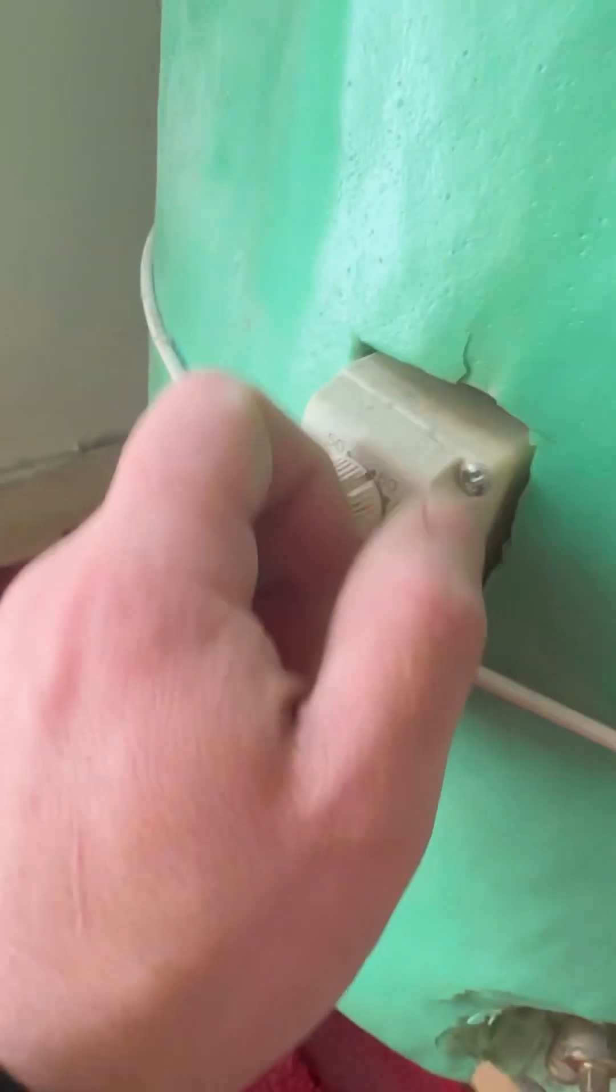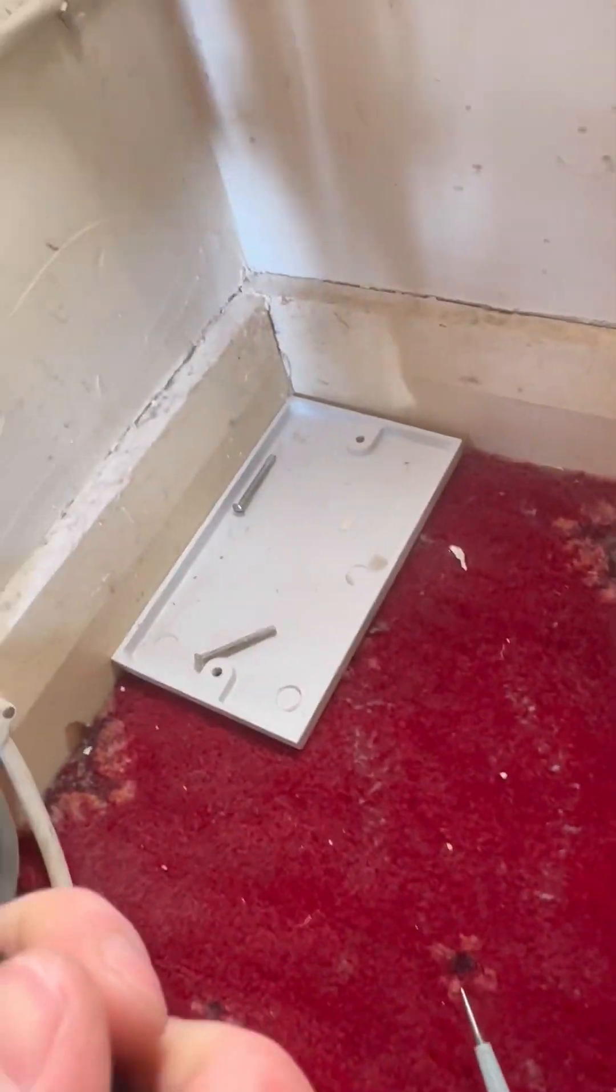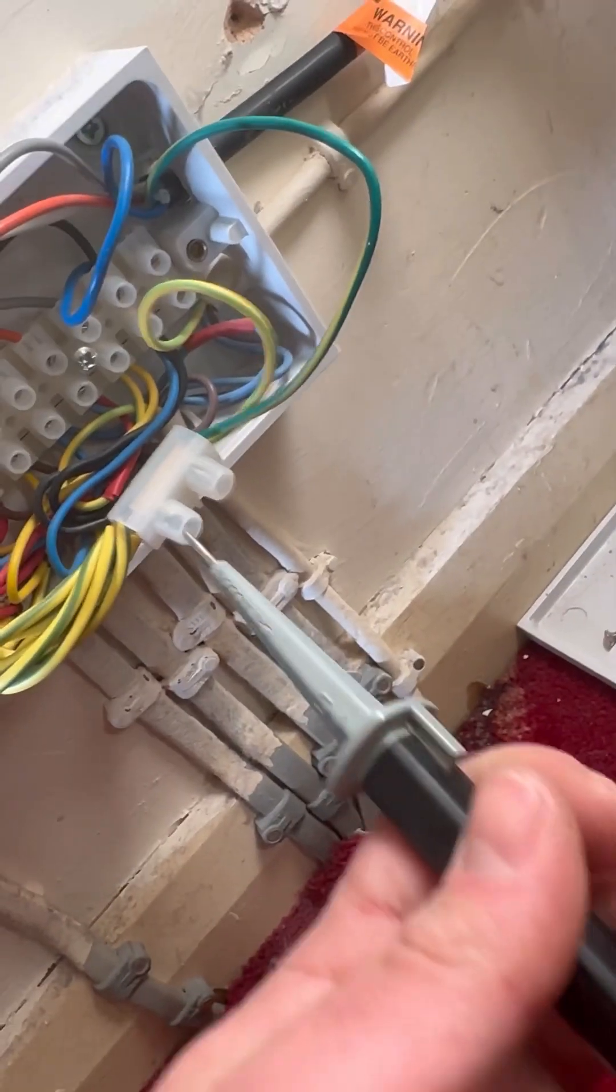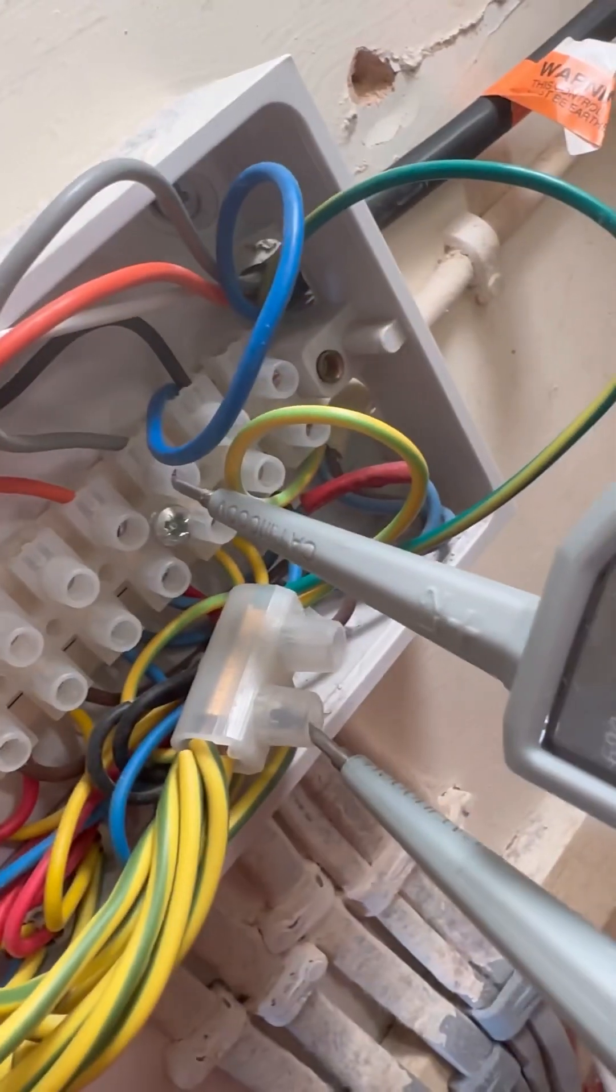So we'll turn the cylinder stat down and then that just proves cylinder stat and programmer are doing their job. So we'll do earth to gray. We're looking for 240 at this point. Yeah, so that's good.